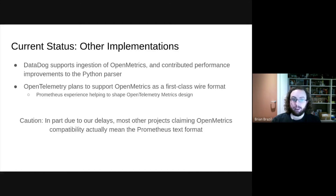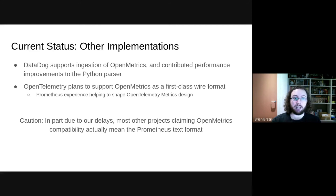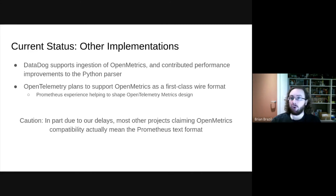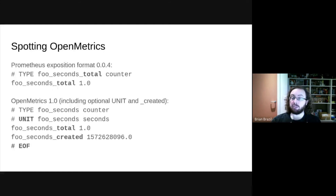We want to be an open standard, so other companies are also ingesting it. Pretty much all the main metrics monitoring vendors, both commercial and non-commercial, support Prometheus text format. Companies like Datadog are already able to ingest OpenMetrics — they also contributed quite a few performance improvements to the official reference parser. In addition, OpenTelemetry is planning to support OpenMetrics as a first-class wire format, and discussions between OpenMetrics and Prometheus are helping shape OpenTelemetry via our experience.